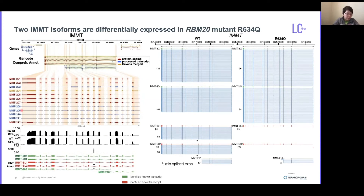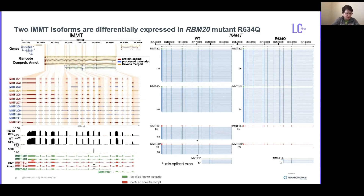Shown here are all annotated transcripts from the GENCODE annotation. Classical analysis using short-read RNA-seq only provides information on which exons are affected in the mutant, as indicated by PSI analysis — you have to make your best guess on which isoforms are being affected. Long-read sequencing, on the other hand, enabled us to identify two new isoforms, IMMT SL1 and SL2. A side-by-side comparison intuitively illustrates that these two new isoforms are only expressed in the wild type but not in the mutant. By comparing to the annotation, we found that these two new isoforms have one exon less compared to their counterparts, IMMT 207 and 204 respectively, suggesting they are splicing products of IMMT 207 and 204. Our own analysis revealed that the splicing of this particular exon can lead to disruption of protein domains.